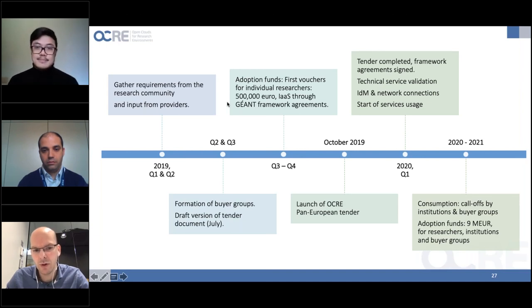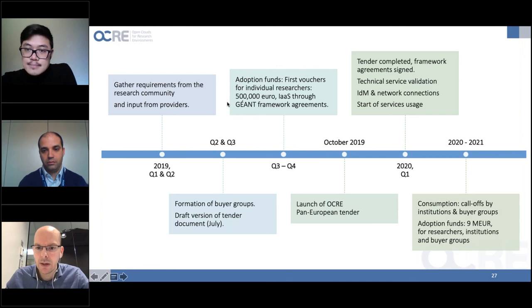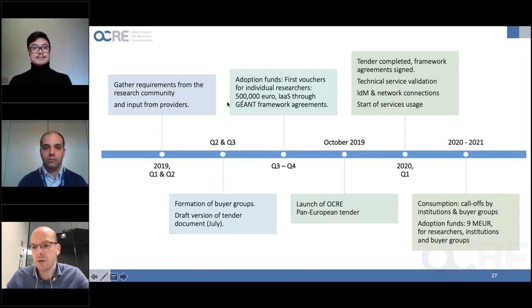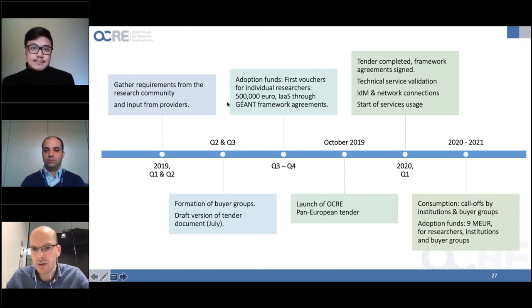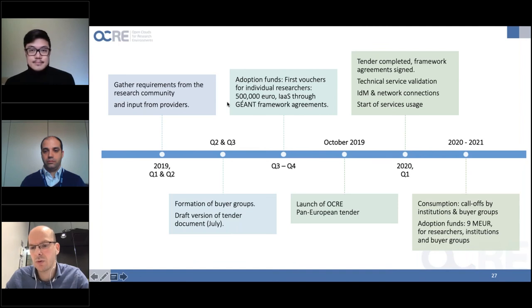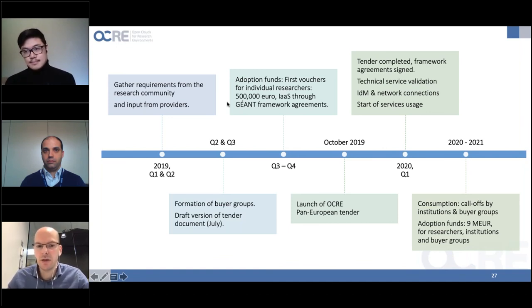Also in July through Q3 and Q4, the first batch of 500,000 euros in vouchers for infrastructure as a service offerings in the GÉANT cloud framework will be made available. We will launch the tender October 1st, publishing the OJEU notice in the Official Journal of the European Union. We want to complete the tender in Q1 2020 — getting framework agreements signed, completing technical service validation through the test suite, putting identity management and network connections in place, and starting service usage. The 9 million euro second batch of vouchers will then go live and run through 2020 and 2021.